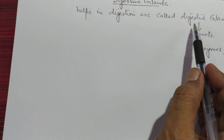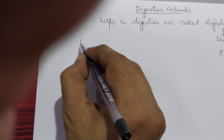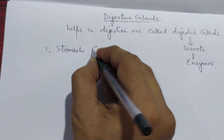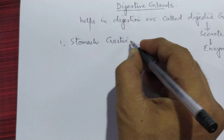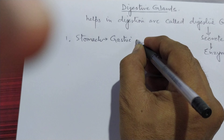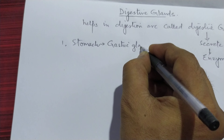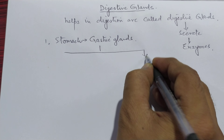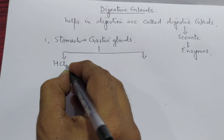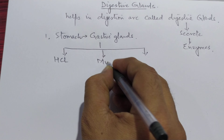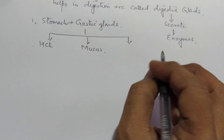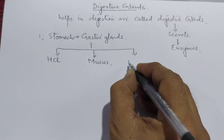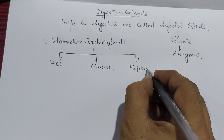Now look where these digestive glands are present in our body. They are present in the stomach, the gastric region. These glands present in the stomach are also known as gastric glands. The gastric glands secrete HCL, mucus, and pepsinogen.